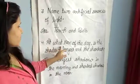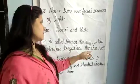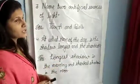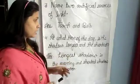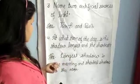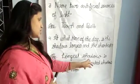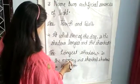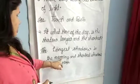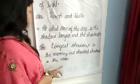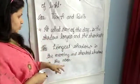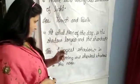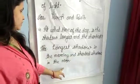At what time of the day is the shadow longest and the shortest? We have asked what time the shadow is long and what time it is short. The longest shadow is in the morning, and the shortest shadow is at noon, because the sun is just up so the shadow is the same.